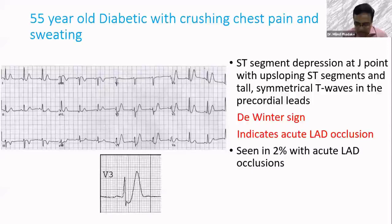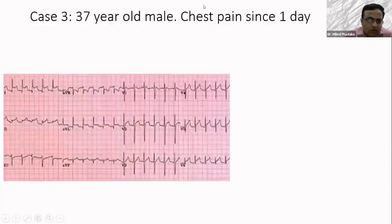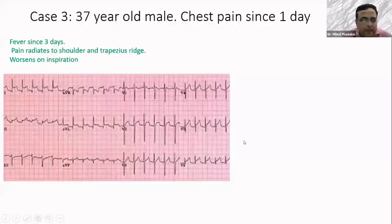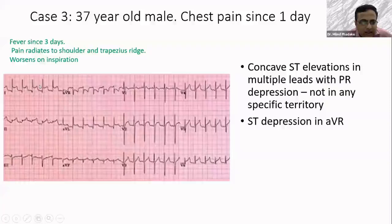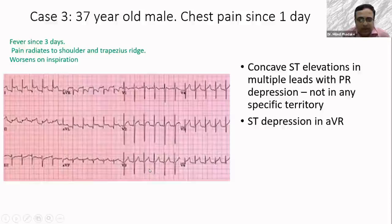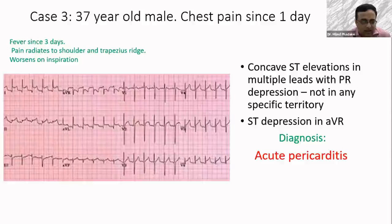The next pattern: a 37-year-old male with chest pain since one day, also with fever since three days. Certain atypical features emerge. The ST depressions are concave, not convex. The ST depressions are present in leads 1, 2, AVL, slightly in AVF, then V2, V3 — they don't respect any particular territory — and they are associated with ST depression in AVR. This is a very typical ECG of acute pericarditis, not myocardial infarction. Along with ST depression in AVR, you also have PR segment elevation in AVR, which is very typical of pericarditis.